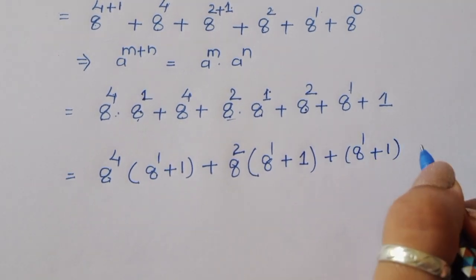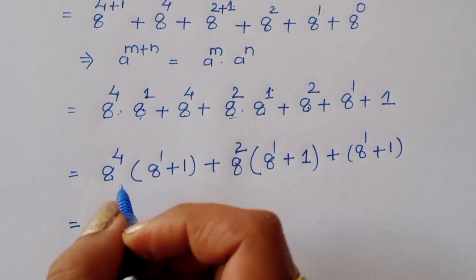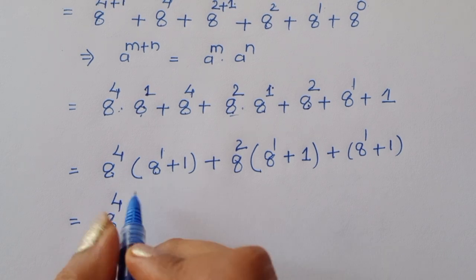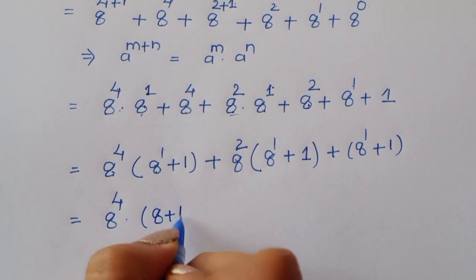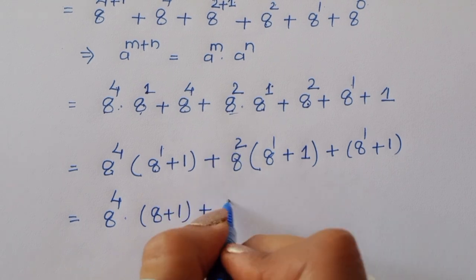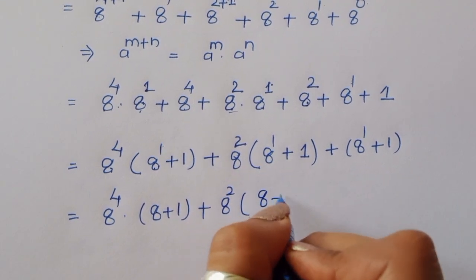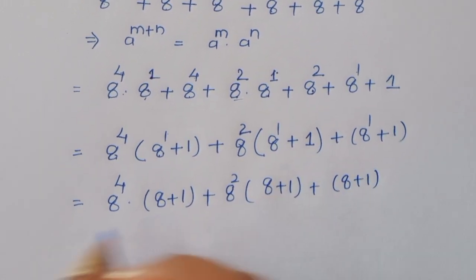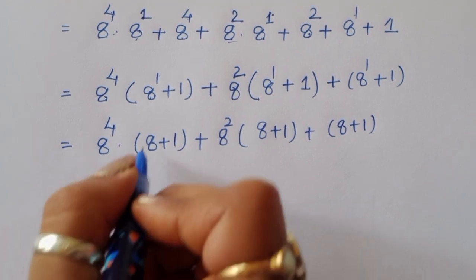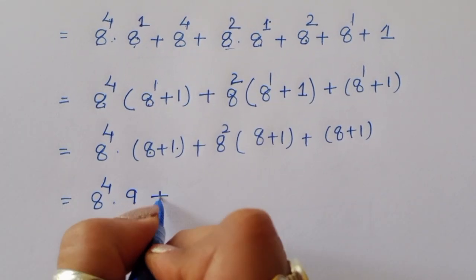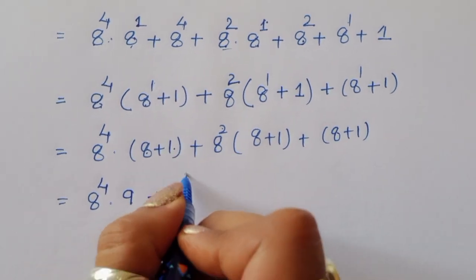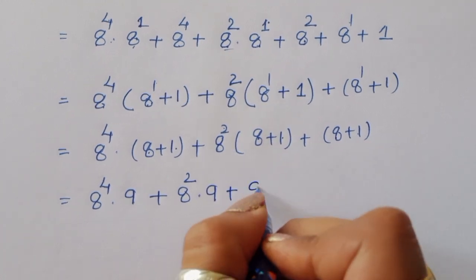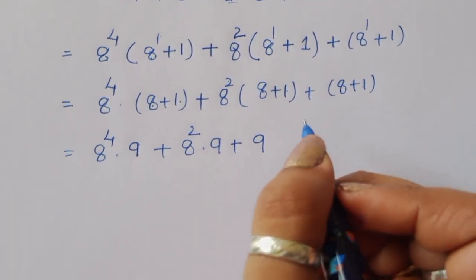Now, 8 power 1 is 8, so (8 power 1 plus 1) becomes (8 plus 1) = 9. So we get: 8 power 4 times 9, plus 8 power 2 times 9, plus 8 plus 1. That last term (8 power 1 plus 1) is also 9. So: 8 power 4 times 9, plus 8 power 2 times 9, plus 9.